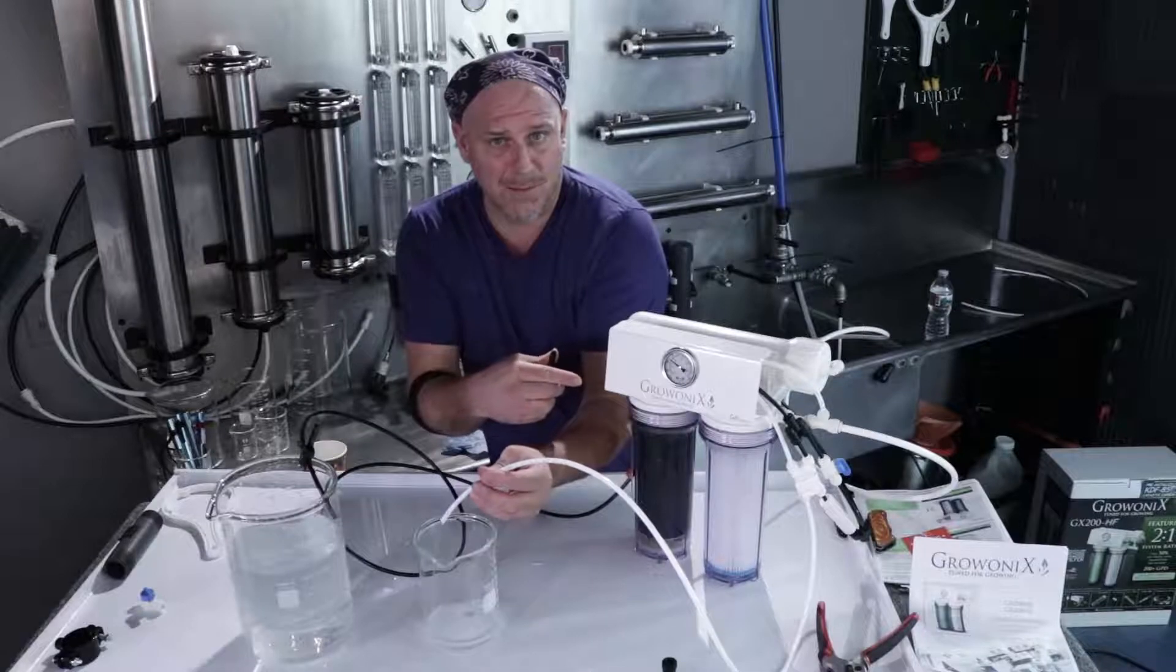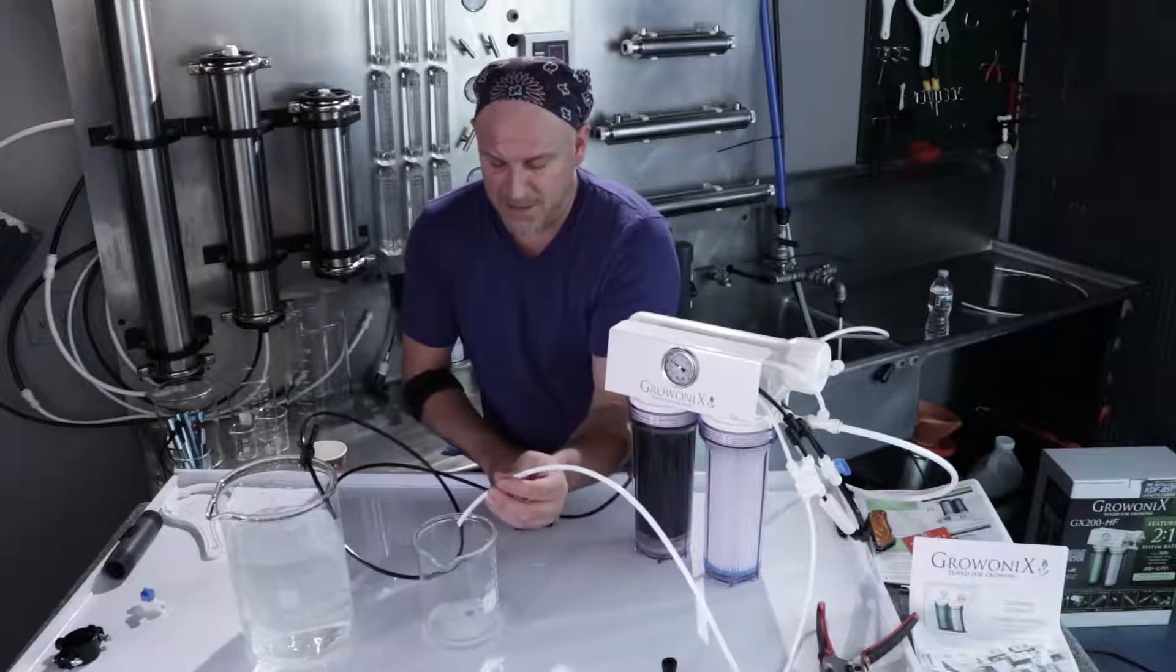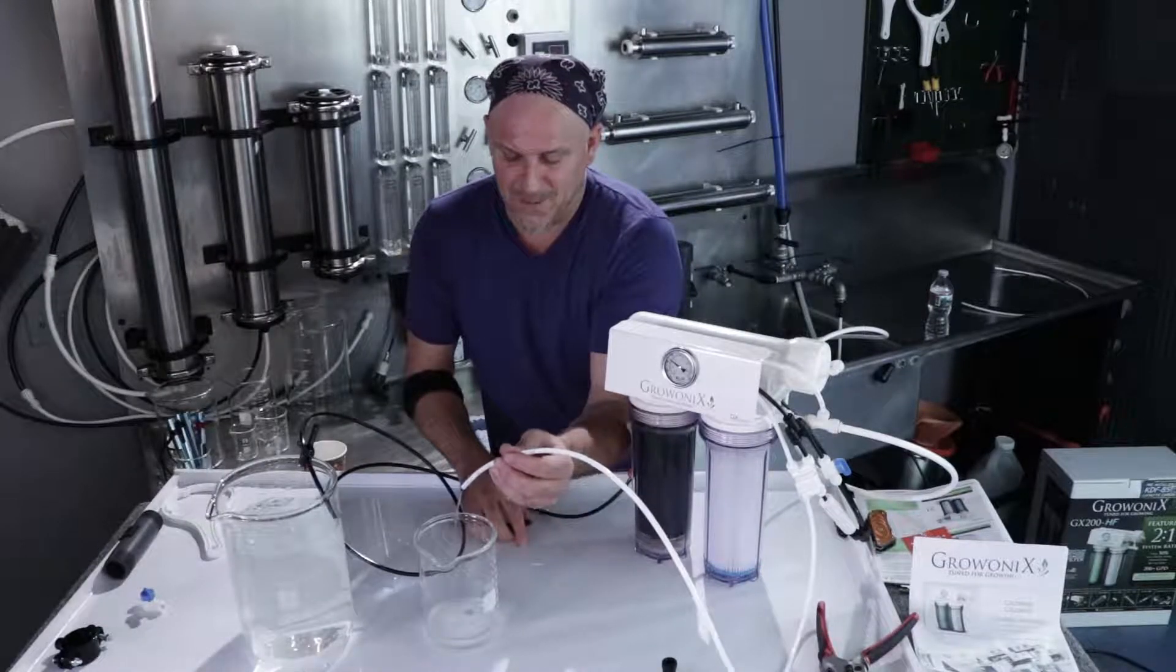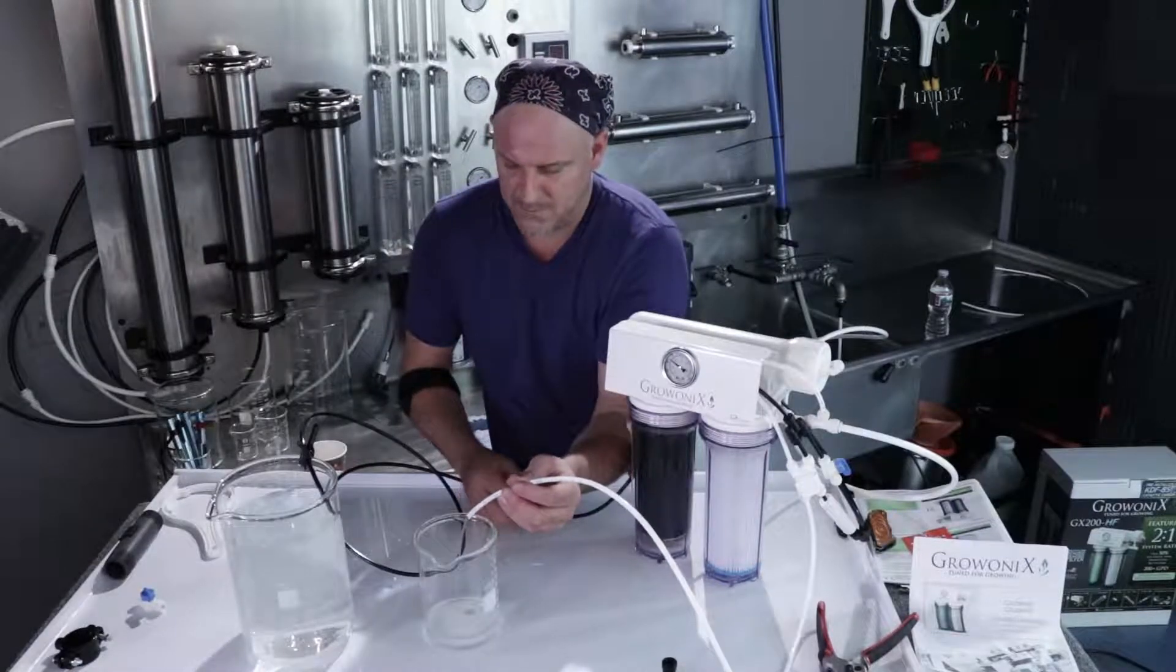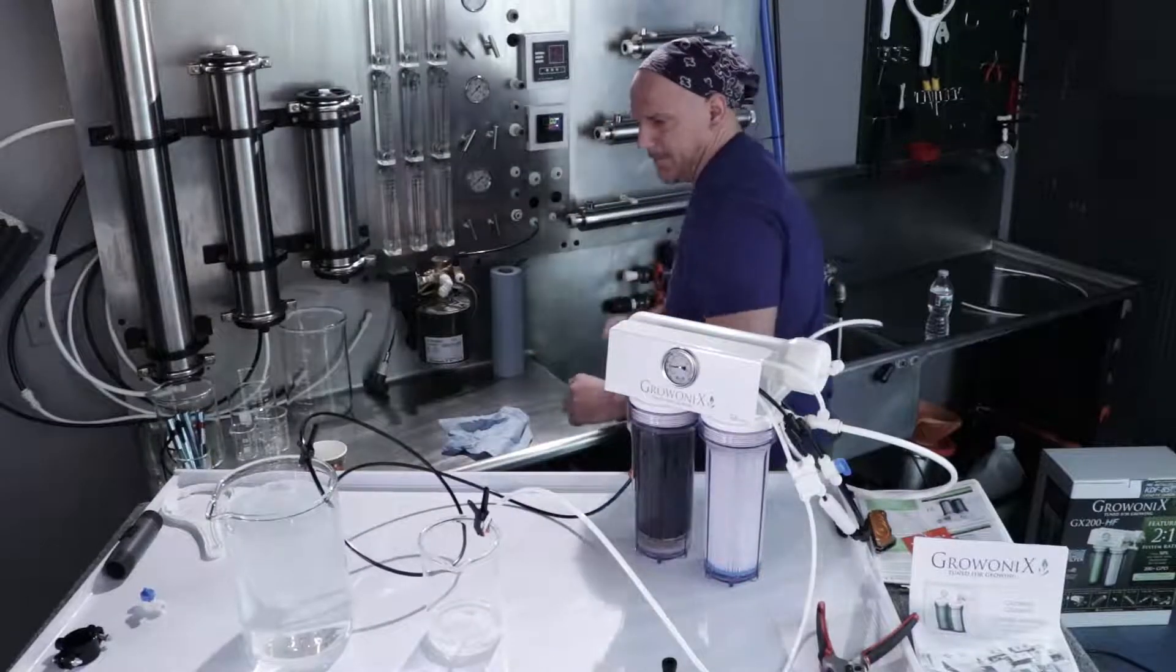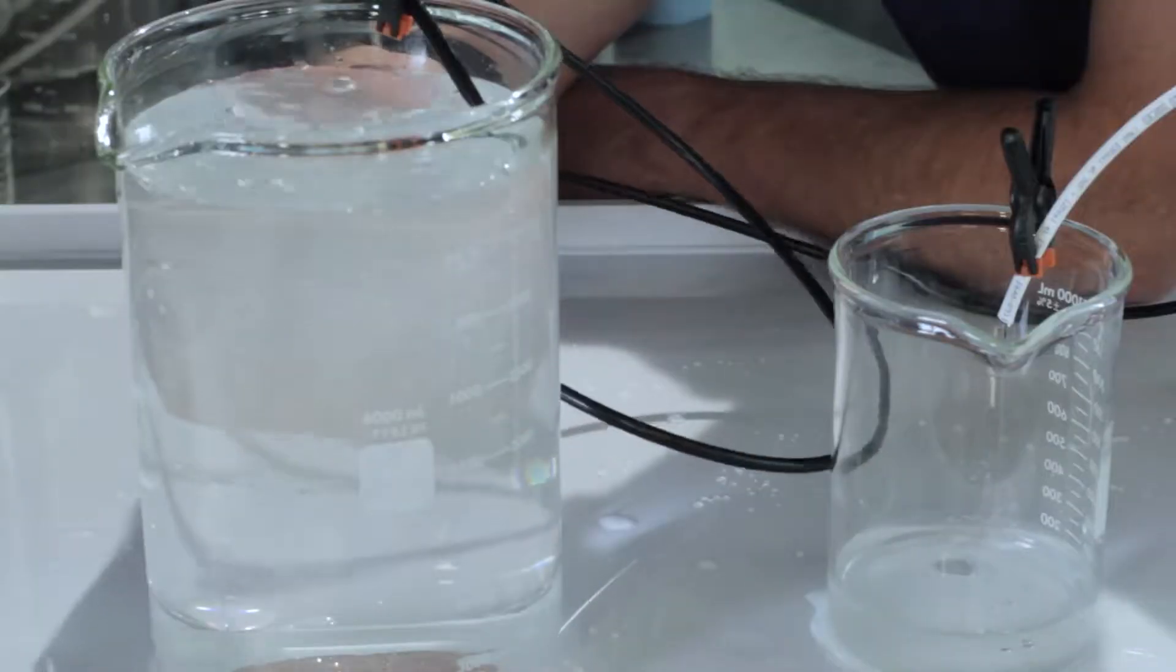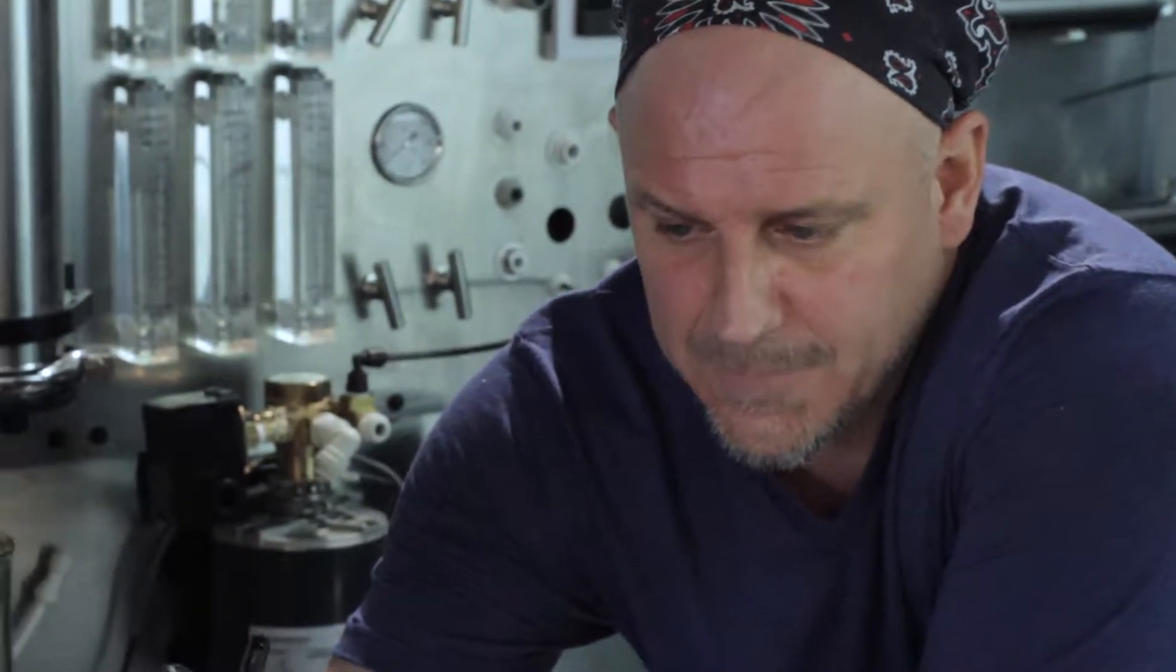Even though the flush valve is open, reverse osmosis is happening and we're making some permeate water. Generally you want to take the first 20 gallons of permeate water and just discard it. You'll notice if you look at the drain water, it's not completely translucent like clear water, it's a little bit yellowish, and that is the storage solution in it.